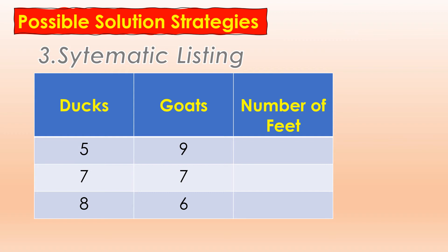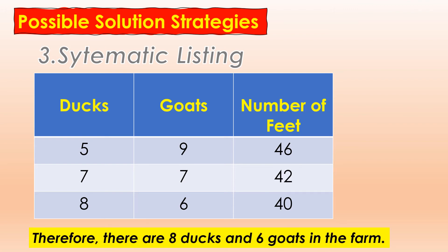The third solution strategy that we can use is systematic listing. We will give the possible number of ducks and goats. The first in the list is 5 ducks and 9 goats — they have a total of 46 feet. The second in the list is 7 ducks and 7 goats — with a total of 42 feet. And the third in the list is 8 ducks and 6 goats — with a total of 40 feet. Therefore, there are 8 ducks and 6 goats in the farm.